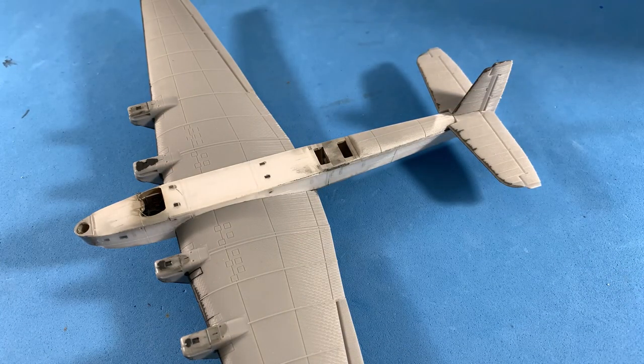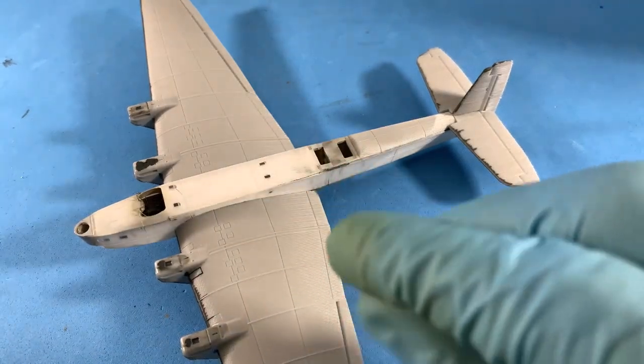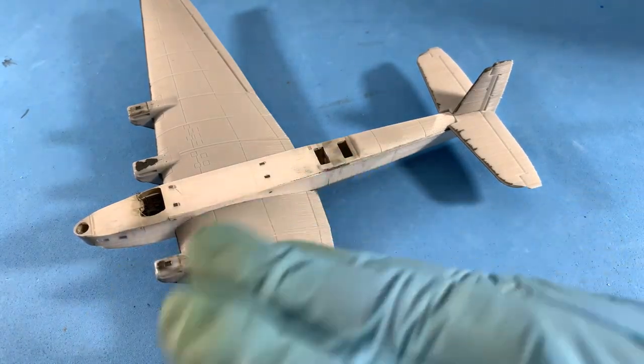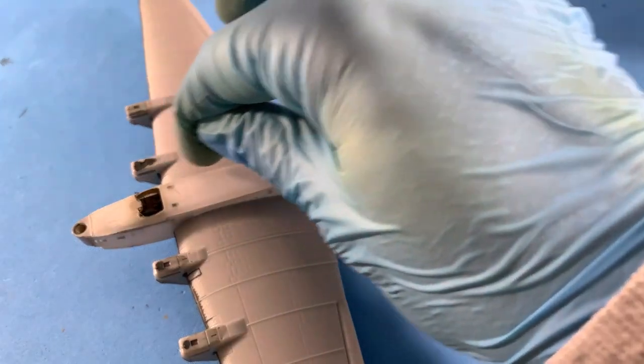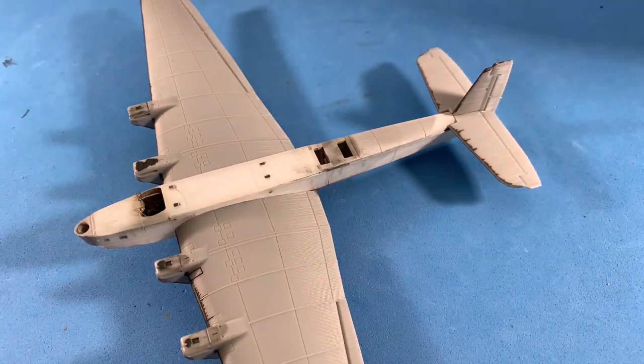Really, the only thing that's left to put on here are the machine guns, but I'm going to save that until after the painting. And then there's some rails that go on the side, so I'm going to do that on the next one.